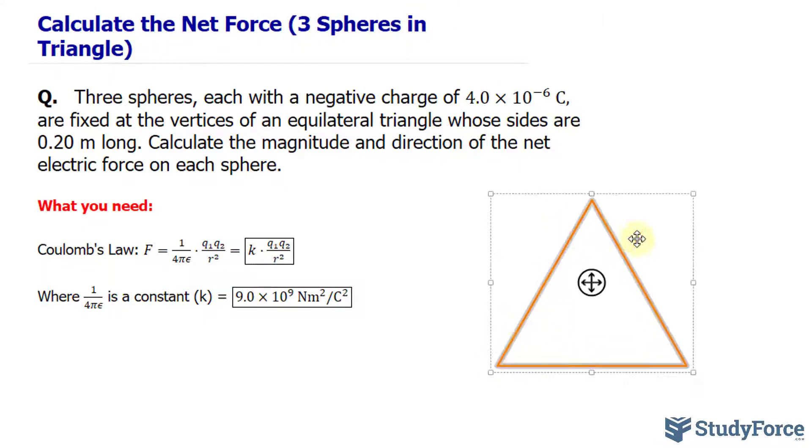Here we have an equilateral triangle, and each of these side lengths is 0.2 meters. We'll represent the charges with these circles, and they're all negative.